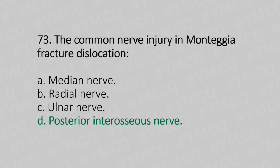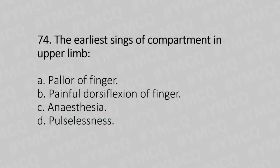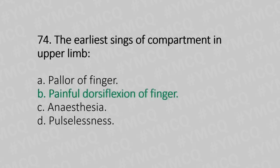Now let's move to question number 74. The early sign of compartment syndrome in the upper limb. Option A: pallor of fingers. Option B: painful dorsiflexion of fingers. Option C: anesthesia. Option D: pulselessness. And the answer is Option B, painful dorsiflexion of fingers.